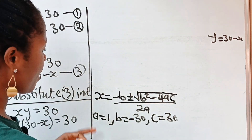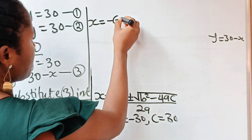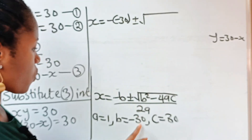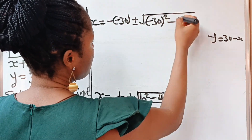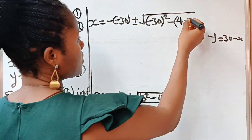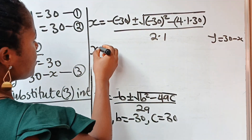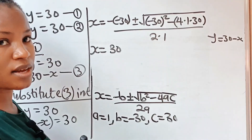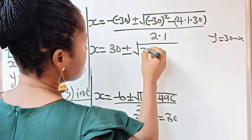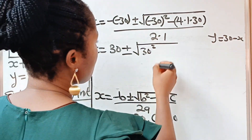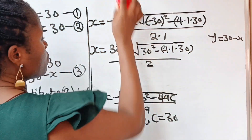So x equals minus b — that is minus (minus 30) — plus or minus the square root of b squared, that is (minus 30) squared, minus 4ac: 4 multiplied by a=1 and c=30. Everything divided by 2 multiplied by 1. So we have x equals 30 plus or minus the square root of 900 minus 120, all divided by 2.